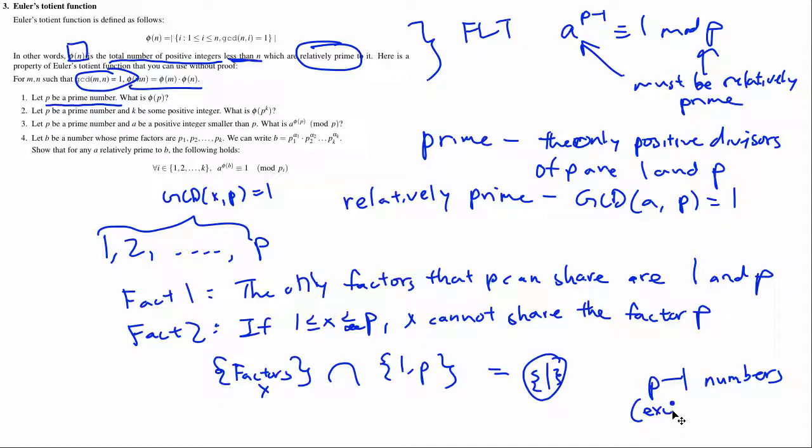And how many numbers are there? Well, if you just take p out, you have p minus 1 numbers. And this is excluding p. So therefore, phi of p equals p minus 1. Great.